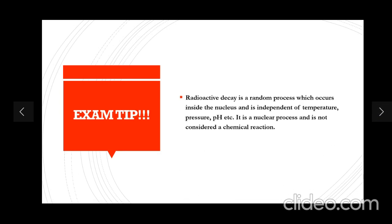Exam tip: you might be thinking radioactive decay is a chemical reaction and wondering if you need to know any equations. The answer is no — you do not need to know any chemical equations, since radioactive decay is not considered a chemical reaction. Radioactive decay is a random process which occurs inside the nucleus and is independent of any conditions — that includes temperature, pressure, pH, or any other conditions. Catalyst is not included. It is a nuclear process and is not considered a chemical reaction.